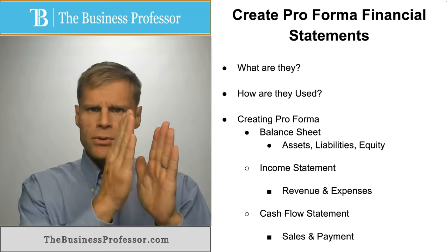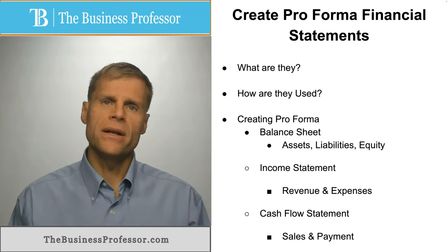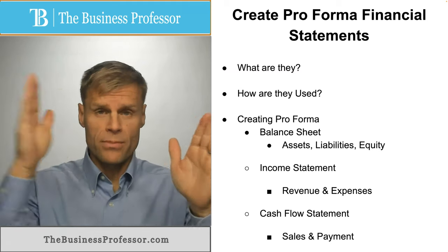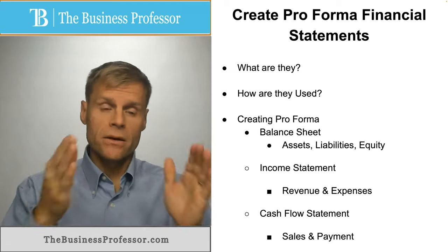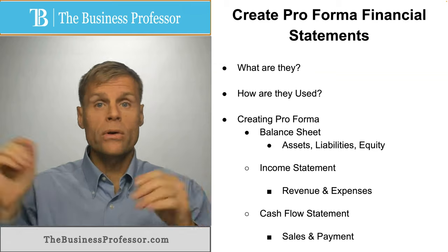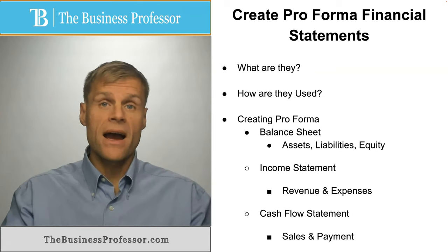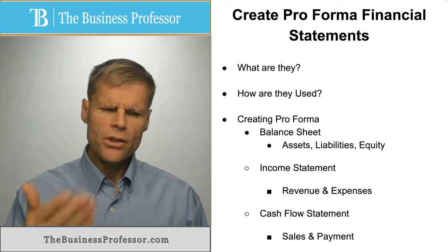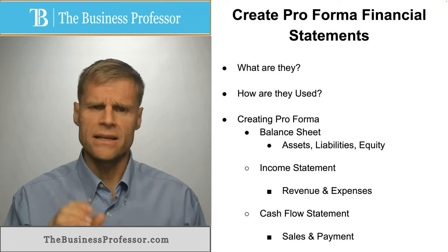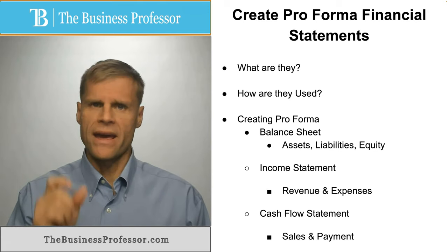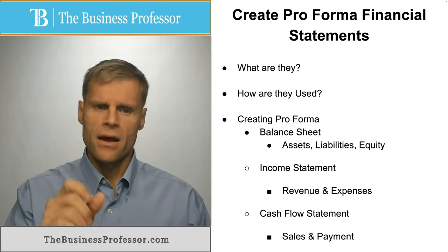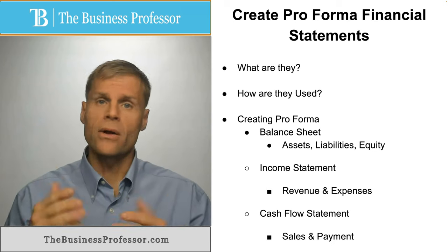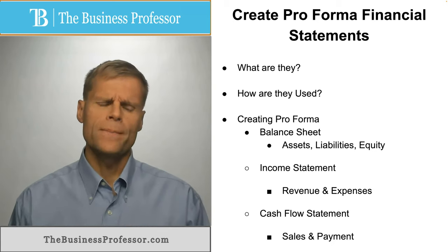You would project out over a given period of time — generally 12 months, month by month. Then the second year, quarter by quarter. And then the third year, the entire year's projection altogether. The further out you get, the more tenuous it gets, so you would add less specificity there as you go out.